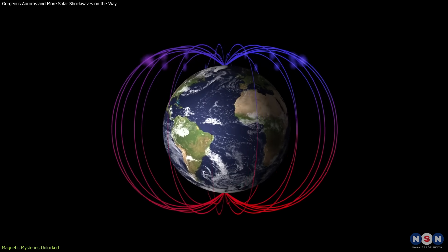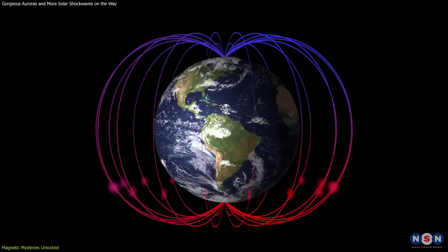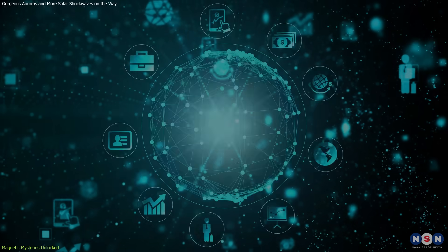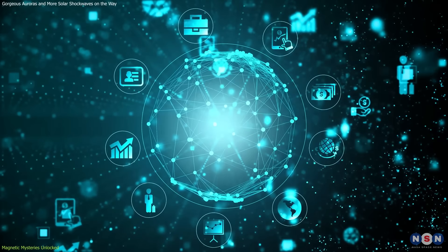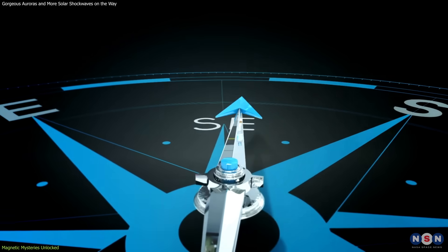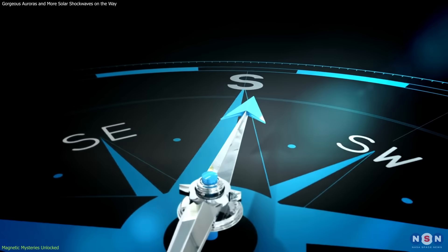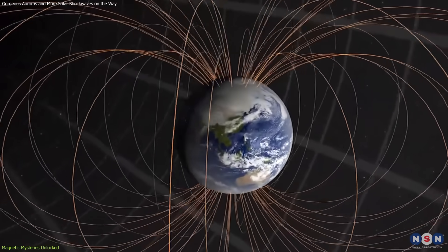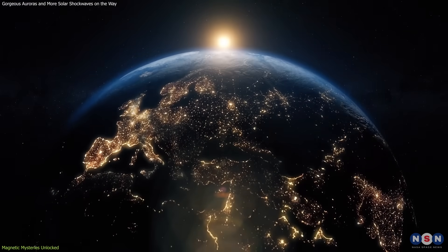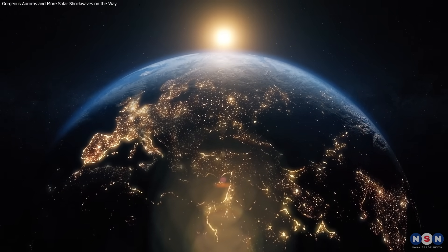The impact of geomagnetism extends into human history as well, influencing everything from navigation to the development of technology. The compass, one of the oldest navigational tools, operates on the principles of Earth's magnetic field. Thus, any significant changes in this field could have far-reaching implications for both natural and human-engineered systems.